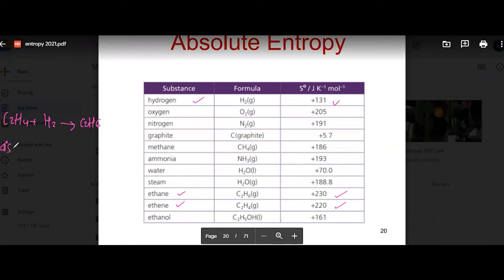So the entropy change at standard conditions will equal the sum of entropy standard of the products minus reactants. So the product is C2H6, which is 230.